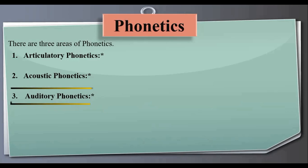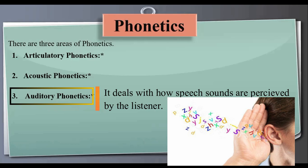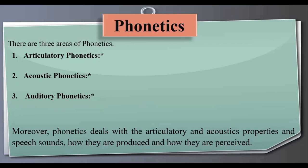Number three is auditory phonetics, which deals with how speech sounds are perceived by the listener — how listeners receive the sounds. In summary, phonetics deals with the articulatory and acoustic properties of speech sounds: how they are produced and how they are perceived.